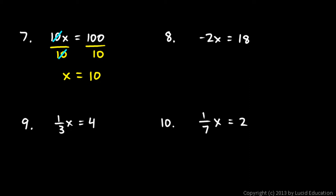Number 8: negative 2x equals 18. I'm going to divide by negative 2 on both sides. The negative 2 in the numerator cancels out with the negative 2 in the denominator. I'm left with x all by itself on the left side, and on the right, 18 divided by negative 2, which is negative 9.